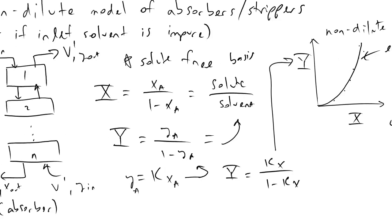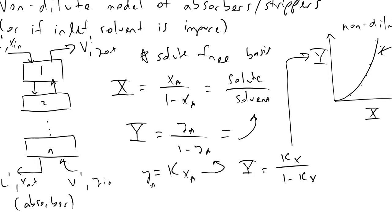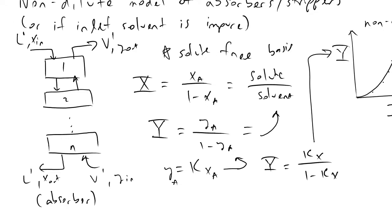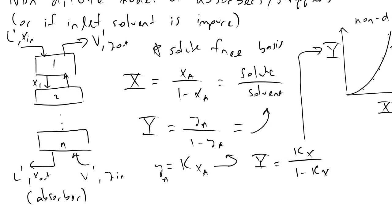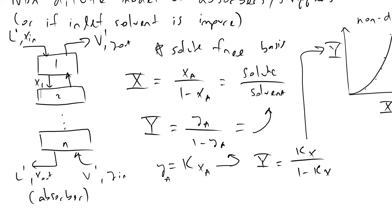And what this equilibrium curve tells us is the outlet stage compositions. So what that means is if we were interested in figuring out this stream exiting tray 1 here with composition x1, if we wanted to find the relationship between x1 and yout, we could do that. Given x1, we would evaluate capital X, we would solve for capital X, we would check what capital Y coordinate we would have, and then we would solve for little y to get y out.